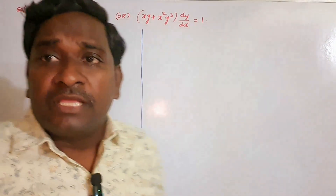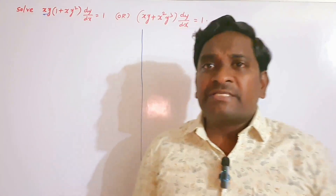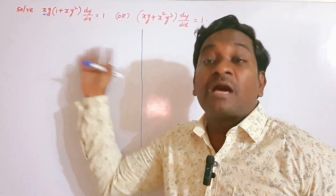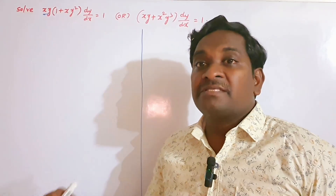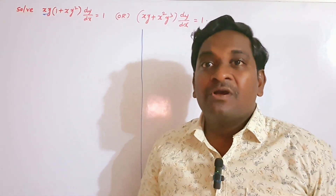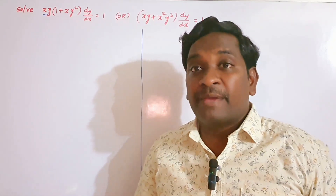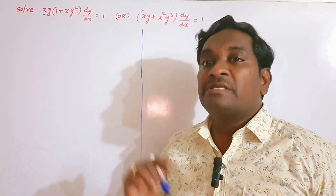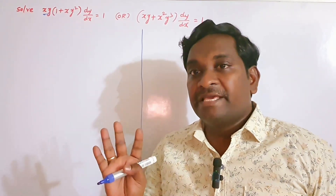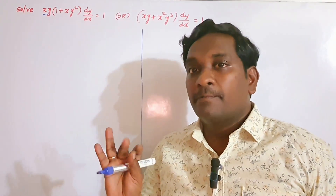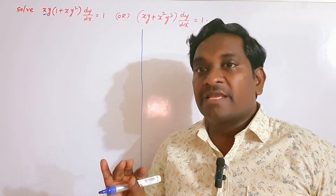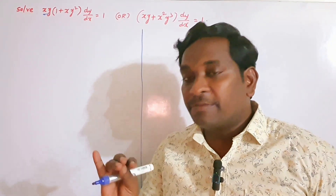First, the question is whether this equation is linear or Bernoulli's. When you get to Bernoulli's in y, or Bernoulli's in x, you can identify which form it takes. Here we will identify it as Bernoulli's in the dependent variable x.